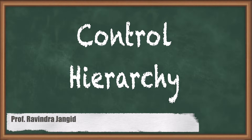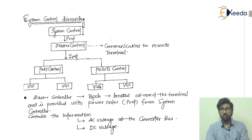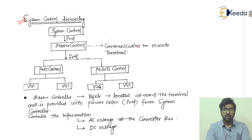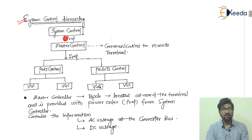We will go through each block one by one. The system control hierarchy consists of different blocks listed here. The first one is the main system control, where the equipments are connected. This system control provides the P_ref, that is the reference power, to your master control.